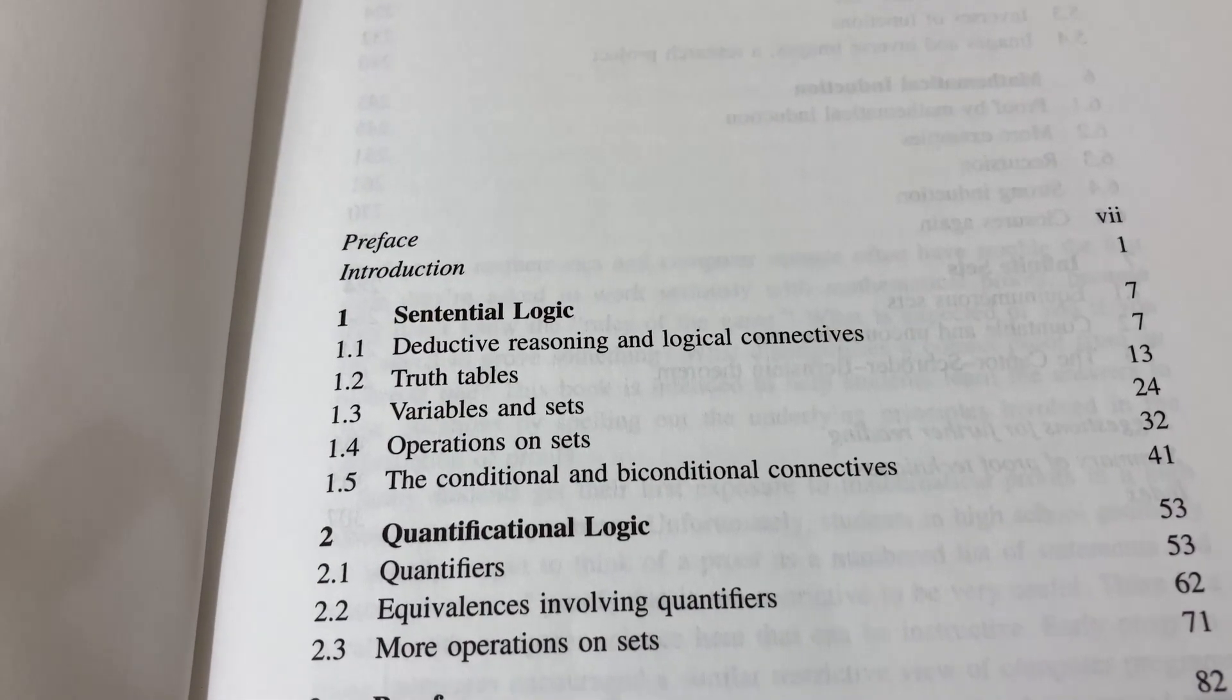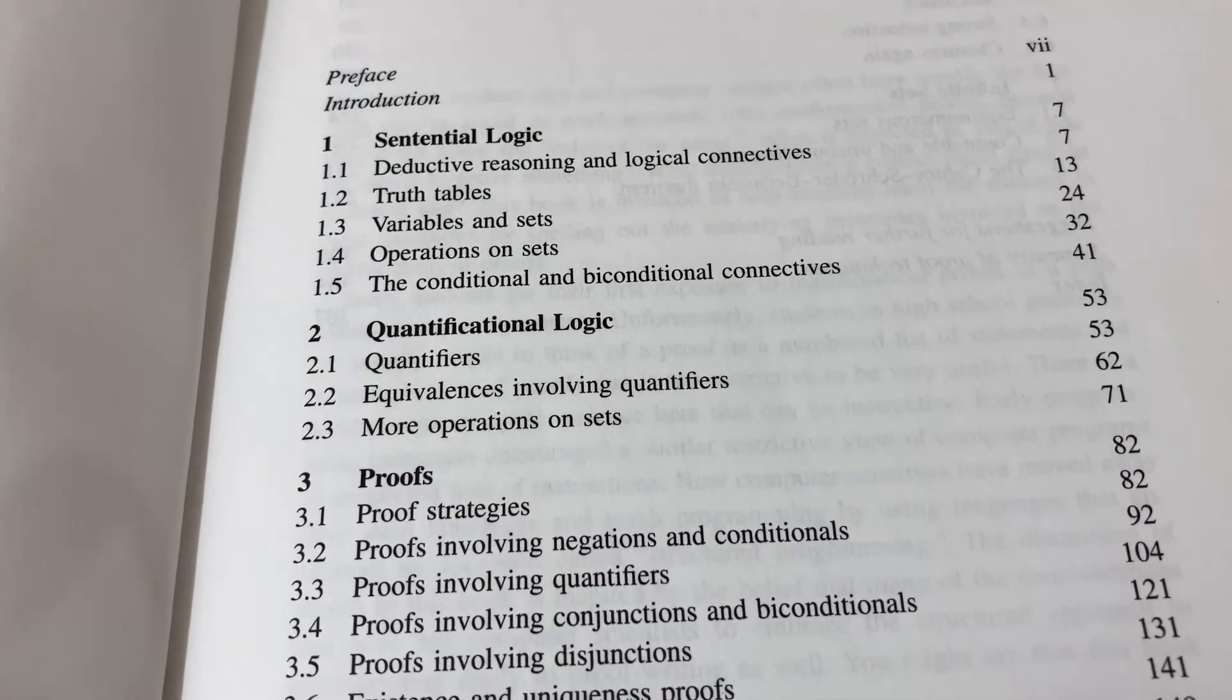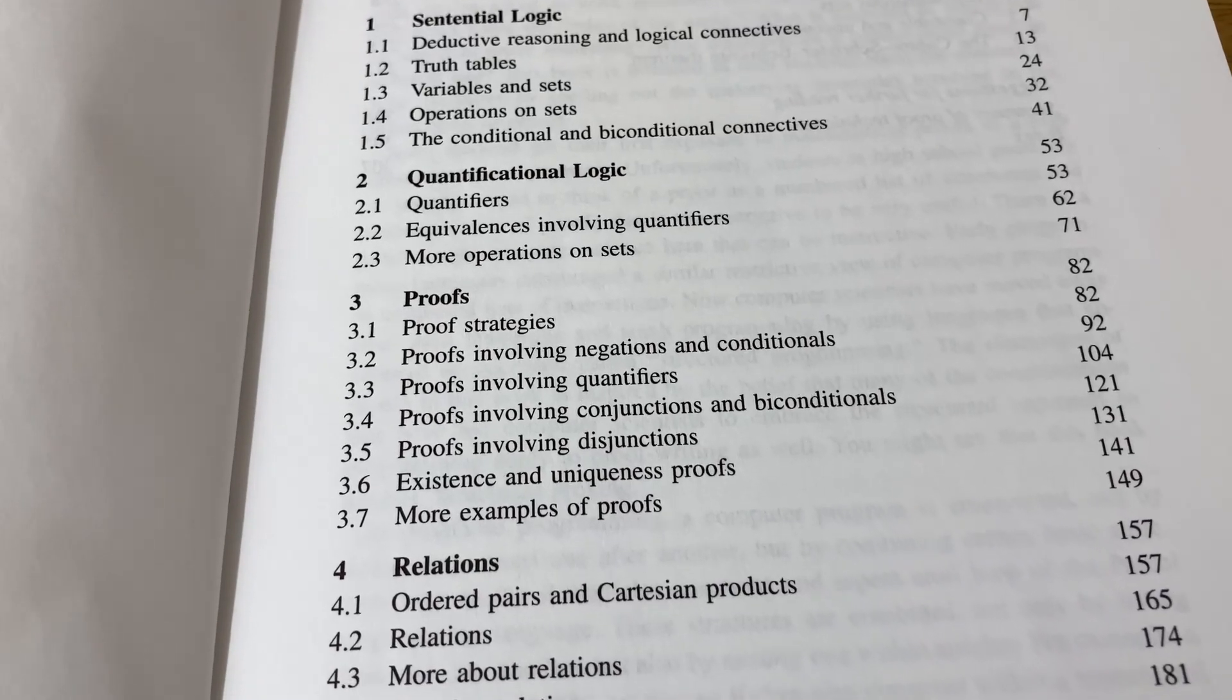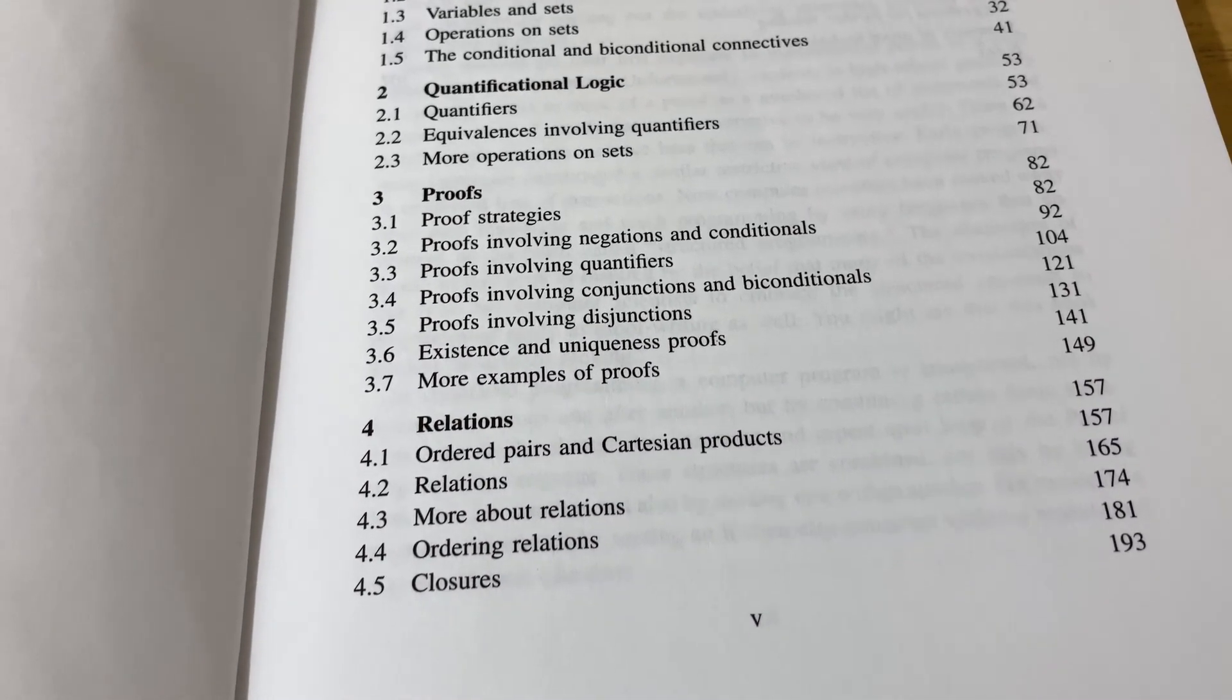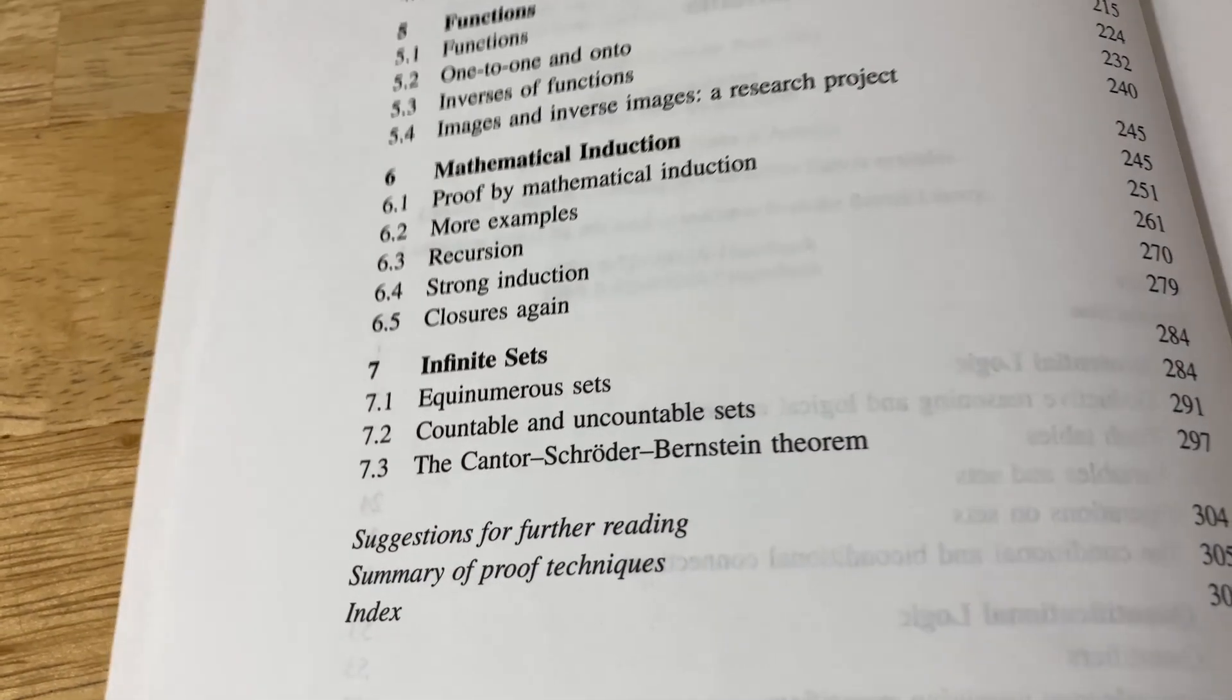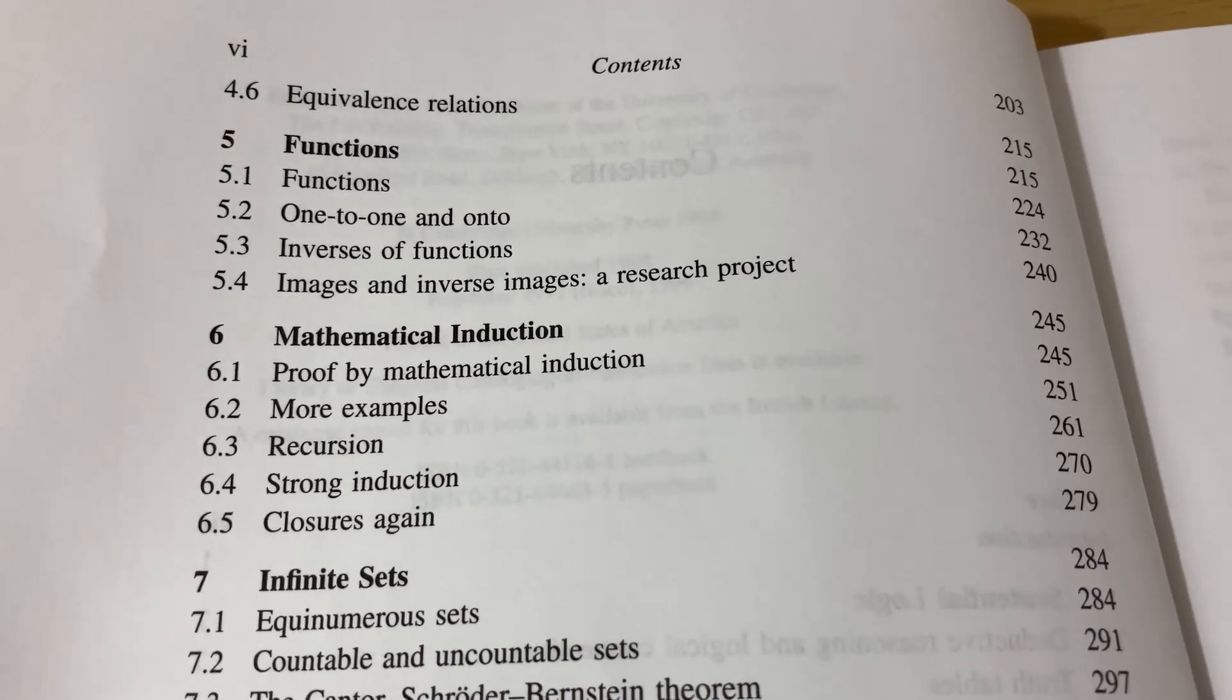So the contents start with logic, and it spends a great deal of time on logic, explaining everything in incredible detail. Then it talks about proofs, and you can see there's all kinds of different proofs that it does. Relations, functions, mathematical induction, and it finishes with infinite sets. So very typical in terms of contents compared to other proof writing books.